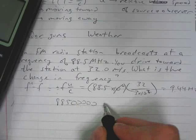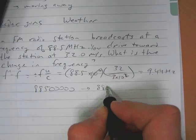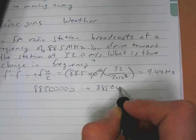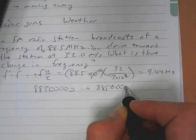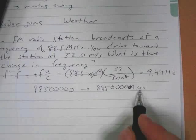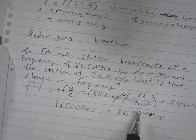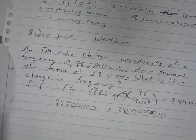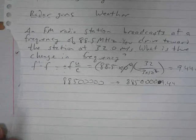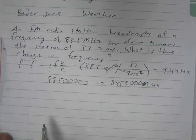Our new frequency then is 88,500,009.44. So there's a very small percent difference, which indicates that if you're tuning a radio station, you don't have to worry about whether you're driving toward the station or not. But it is a detectable difference, and that's important with things like Doppler radar.